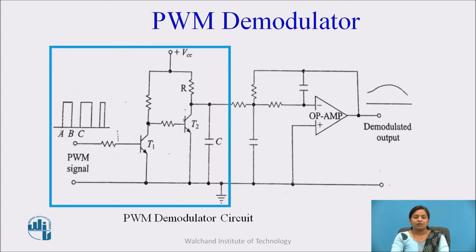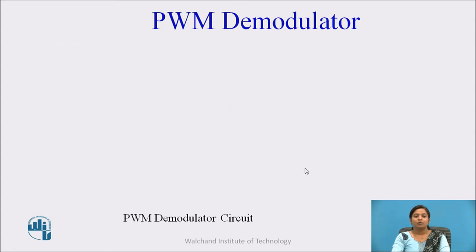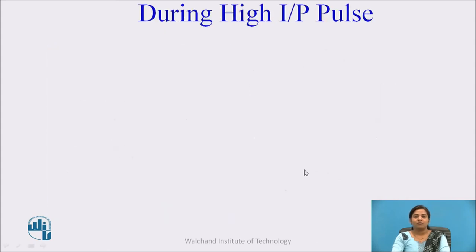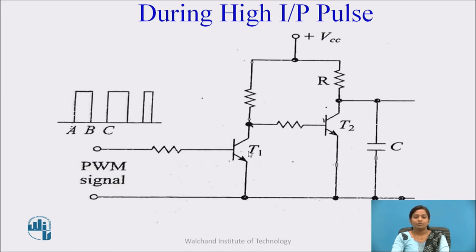Let us see the demodulator circuit. The demodulator circuit has two parts. The first part is the transistorized circuit, and the second part is a low-pass filter circuit where an op-amp circuit is used. In the transistorized circuit, two transistors are used: transistor T1 and transistor T2. The input to transistor T1 is the PWM (pulse-width modulated) signal. The output of this signal is observed at the collector of transistor T2.